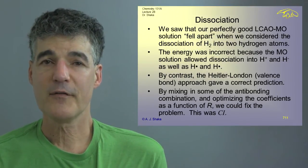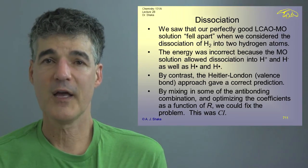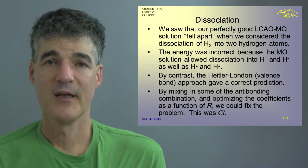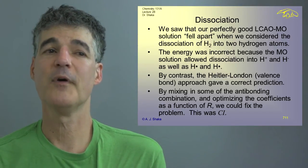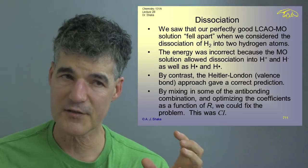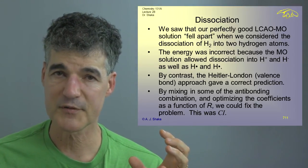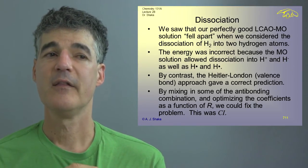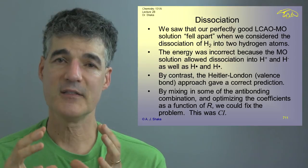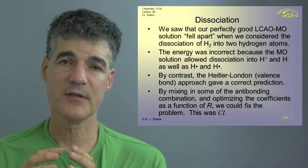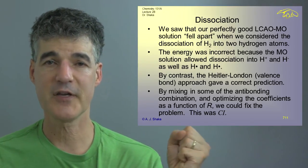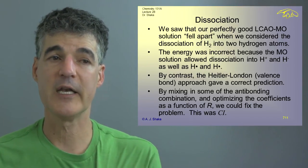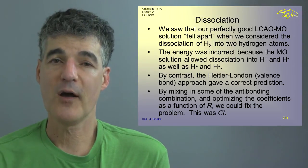We saw that our perfectly good LCAO-MO solution for hydrogen, molecular hydrogen H2, sort of fell apart when we considered the dissociation of H2 into two hydrogen atoms. And when we looked at that, what we realized is that the molecular orbital approach assigns equal weight to dissociating as to H atom and H atom and hydride and H plus or a proton. And that was the problem there.